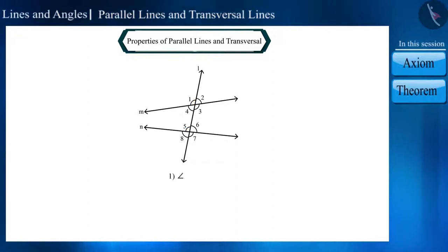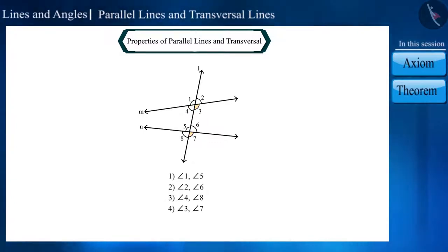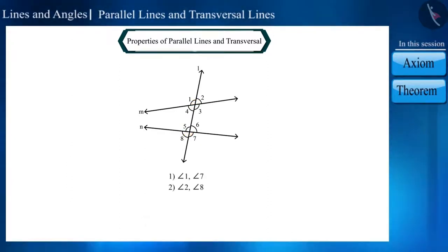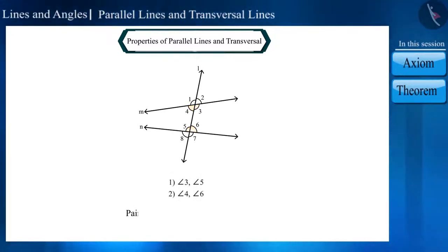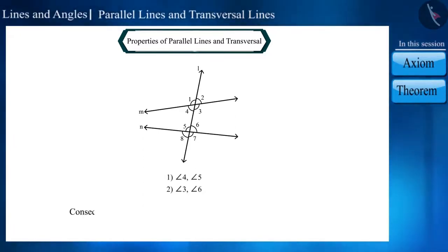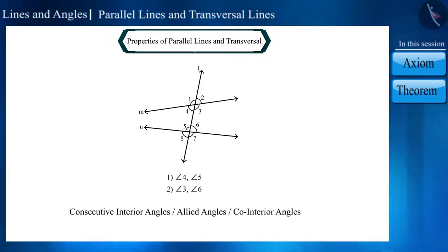For example, these are pairs of corresponding angles and these are pairs of alternate angles. In this, we call these alternate exterior angles, and these are called alternate interior angles. The pair of interior angles formed on one side of the transversal are called consecutive interior angles or allied angles.